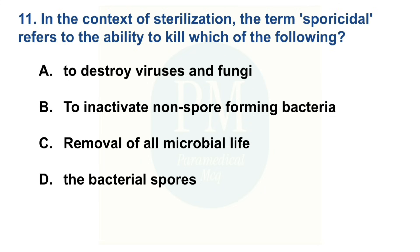In the context of sterilization, the term 'sporicidal' refers to the ability to kill which of the following? Option A: To destroy virus and fungi. Option B: To inactivate non-spore forming bacteria. Option C: Removal of all microbial life. Option D: The bacterial spores. The correct option is Option D: The bacterial spores.